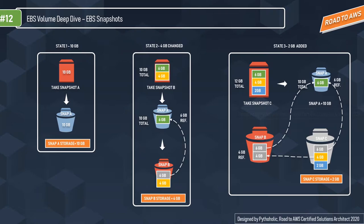EBS volumes are availability-zone-specific. In State 1 we had 10 GB and Snap A. In State 2, the 6 GB unchanged was referenced from Snap A and the 4 GB changed was saved in Snap B. In State 3, the additional 2 GB was in Snap C, with the 4 GB referenced from Snap B and the 6 GB referenced from Snap A — that's how snapshots work.